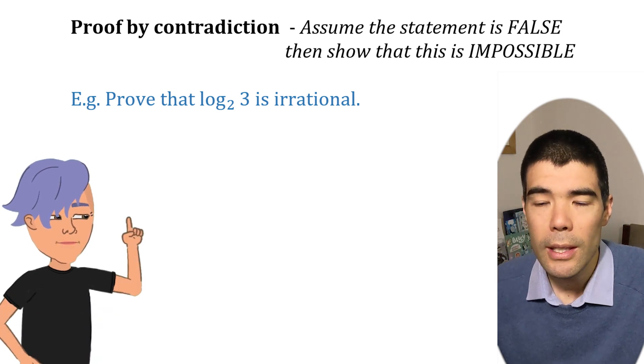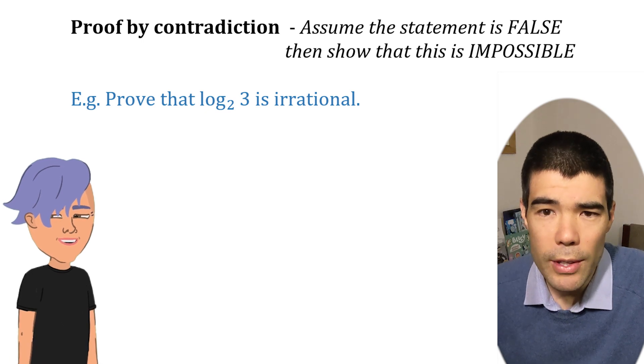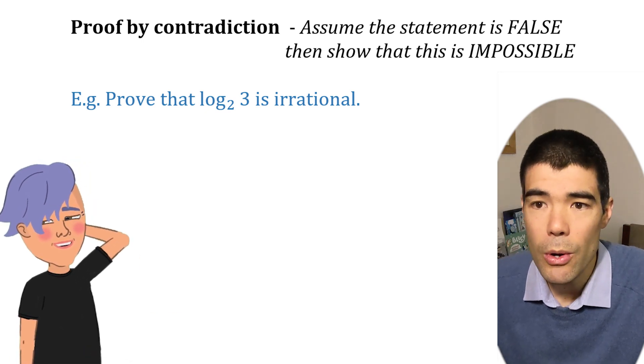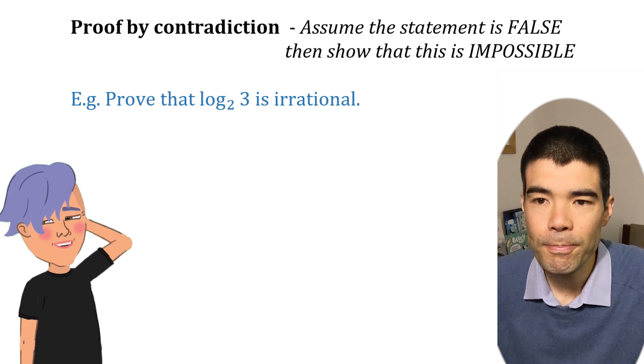Breaking the laws. Let's take an example. We want to prove that the log base two of three is irrational. Is that like a complex number? Well, irrational numbers are still real. They just can't be written as fractions, like pi or square root of two. Oh, yeah, yeah, right, right. Gotcha.